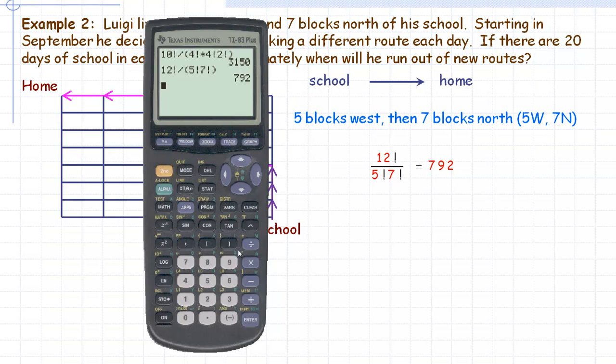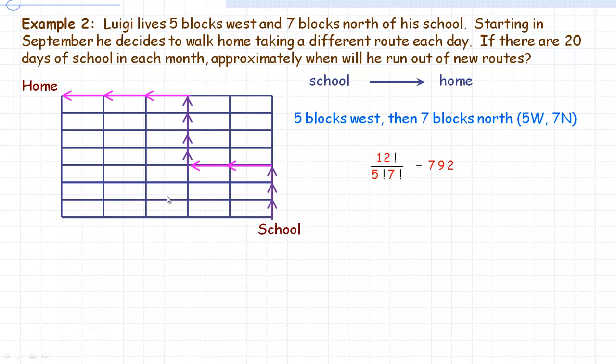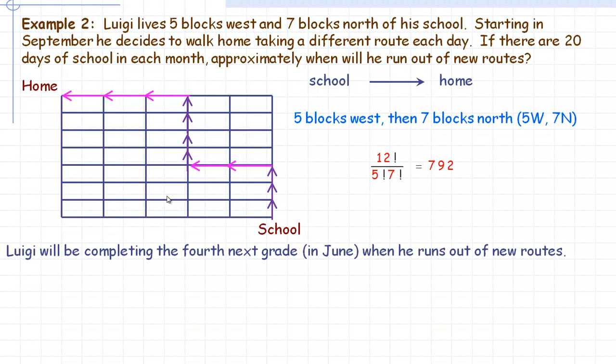Now, so 20 days of school in a month times 10 months, so about 200 school days in a year. So he's got 792 potential routes here. And so 200 for one grade, and 200 for another grade, and 200 for another grade, that only takes you up to 600. So he still has 192 more for the following year, the fourth year, which means he's getting into the last year of school, because if we add another 200 onto that, that takes up to 800, so in four school years it would be about 800 days approximately. So he's completing the fourth next grade, probably in June, at the end of the school year, before he runs out of routes, using a new route every single time he goes from school to home.